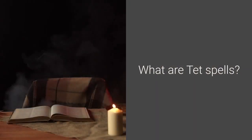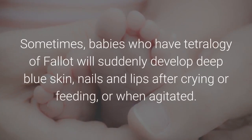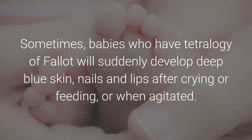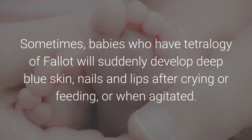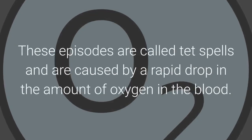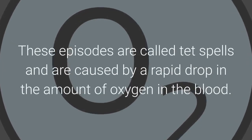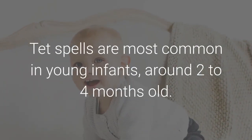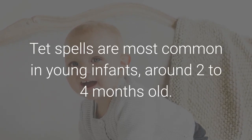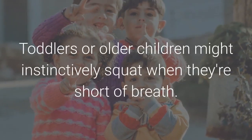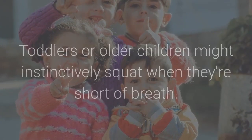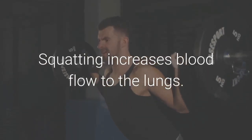What are Tet spells? Sometimes, babies who have Tetralogy of Fallot will suddenly develop deep blue skin, nails and lips after crying or feeding, or when agitated. These episodes are called Tet spells and are caused by a rapid drop in the amount of oxygen in the blood. Tet spells are most common in young infants, around two to four months old. Toddlers or older children might instinctively squat when they're short of breath, as squatting increases blood flow to the lungs.